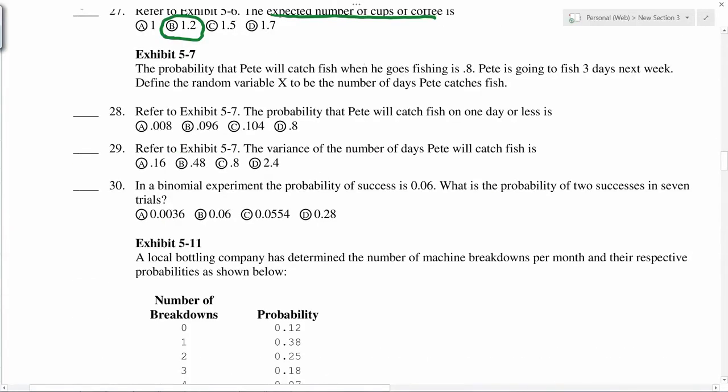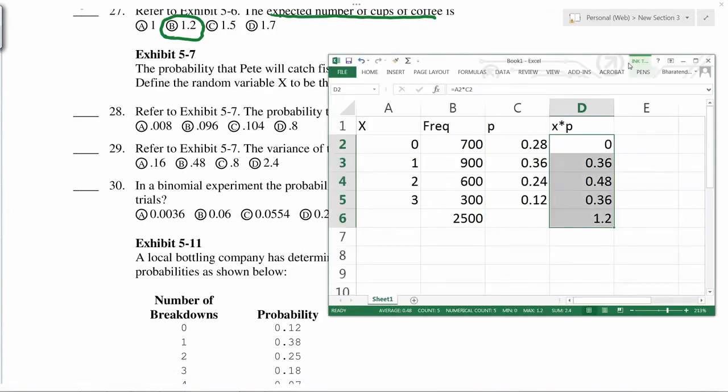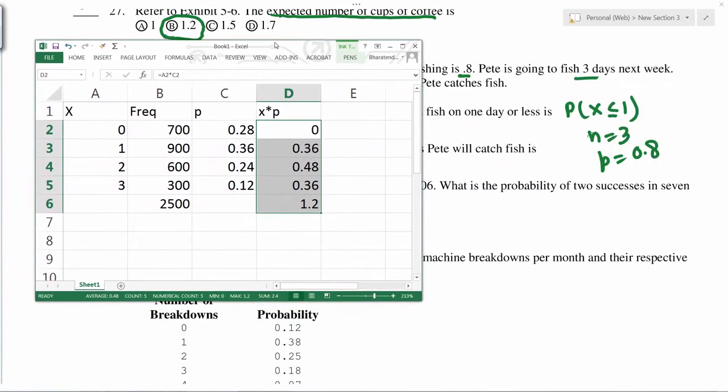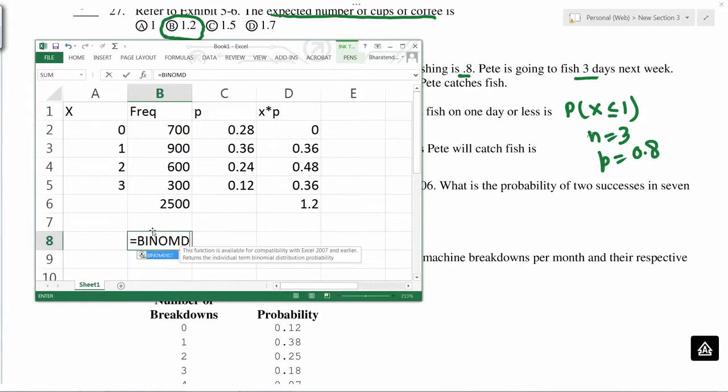Probability that Pete will catch fish is 0.8. Goes for fishing three days. So what is the probability that Pete will catch fish on one day or less? Probability of x less than or equal to 1. So remember, n equals 3 and p equals 0.8. Equals binomial distribution.